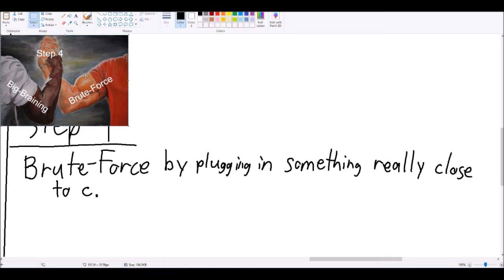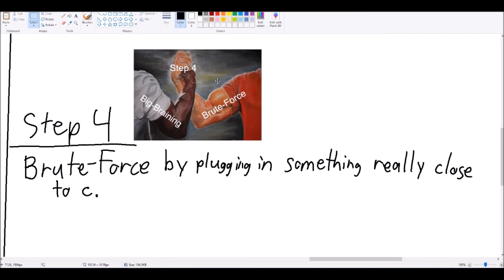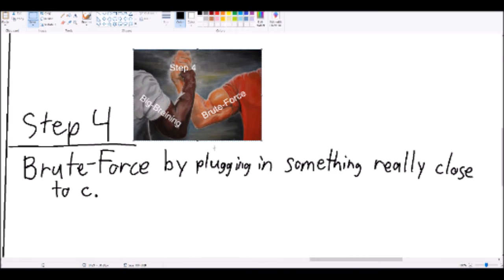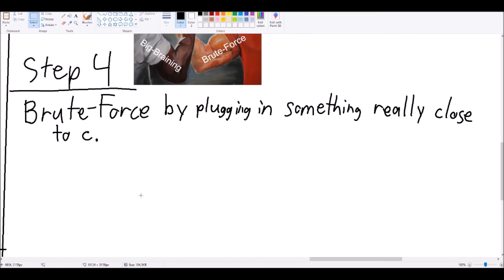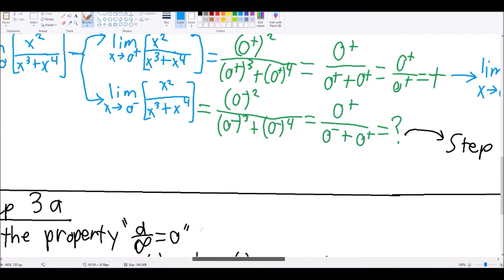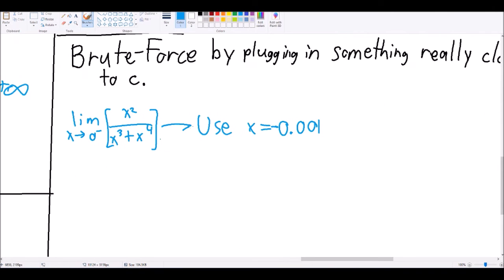Step 4, you're probably working with approaching a forbidden value that leads to an answer of infinity. So, for this, we're going to have to brute force this by picking a number really close to what we're trying to approach and plug it into the equation. For example, let's choose x equals negative 0.001.